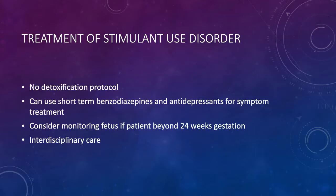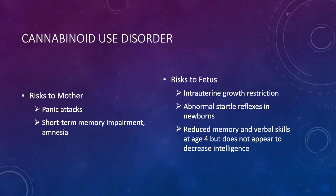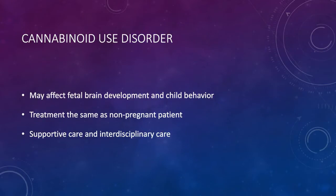Cannabinoid use disorder has very limited information. Maternal risks include panic attacks, short-term memory impairment, and amnesia. Fetal risks include intrauterine growth restriction, abnormal startle reflex in newborns, and reduced memory and verbal skills at age four, though it does not appear to affect intelligence. Marijuana and other forms of THC can affect fetal brain development and child behavior. Treatment is the same as for non-pregnant patients: counsel to quit, supportive care, and interdisciplinary care.